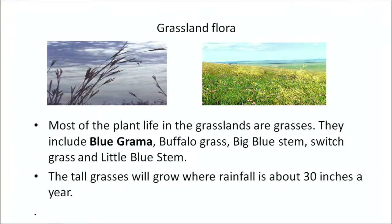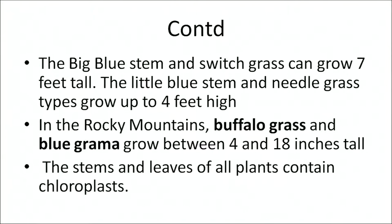Most of the plant life in grasslands is grasses, including blue grama, buffalo grass, big blue stem, stretch grasses and little blue stem. Tall grasses grow where rainfall is about 30 inches a year. Big blue stem and stretch grass can grow up to 7 feet tall. Little blue stem and needle grass types grow up to 4 feet high. In the Rocky Mountains, buffalo grass and blue grama grass are between 4 to 18 inches tall. The stems and leaves of the plants contain chloroplasts for the process of photosynthesis.